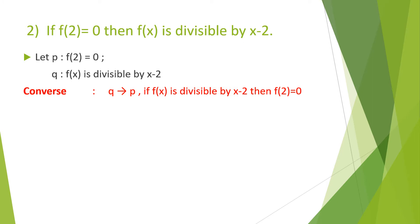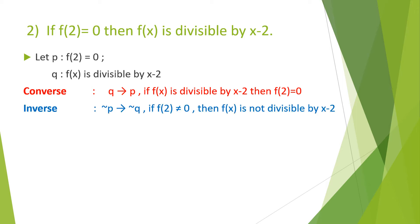Now try to write the statements with me. Converse is Q implies P — so if Q means f(x) is divisible by x minus 2, then P is f(2) = 0. So the converse is: if f(x) is divisible by x minus 2, then f(2) = 0. Next is inverse: negation P implies negation Q, that is, if f(2) ≠ 0, then f(x) is not divisible by x minus 2.